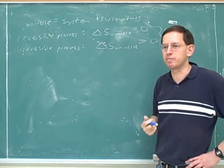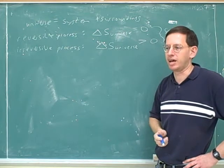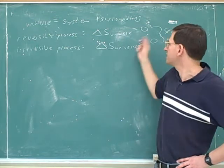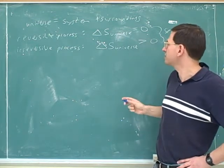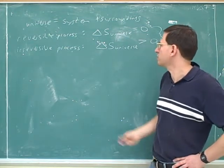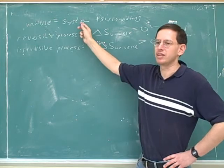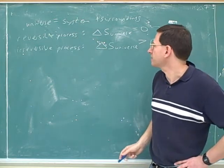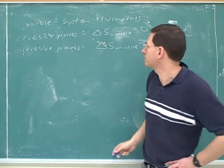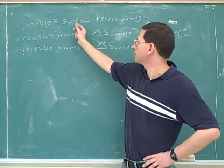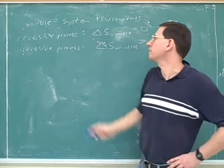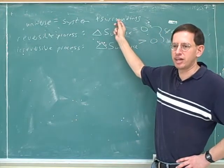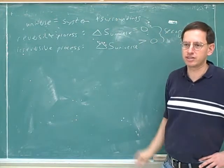That's a common mistake that people make and a common trap on exams. The second law does not tell us that the entropy of the system is always going up. It's perfectly possible for the entropy of the system to go down, but only if that is at least counterbalanced by the entropy of the surroundings.